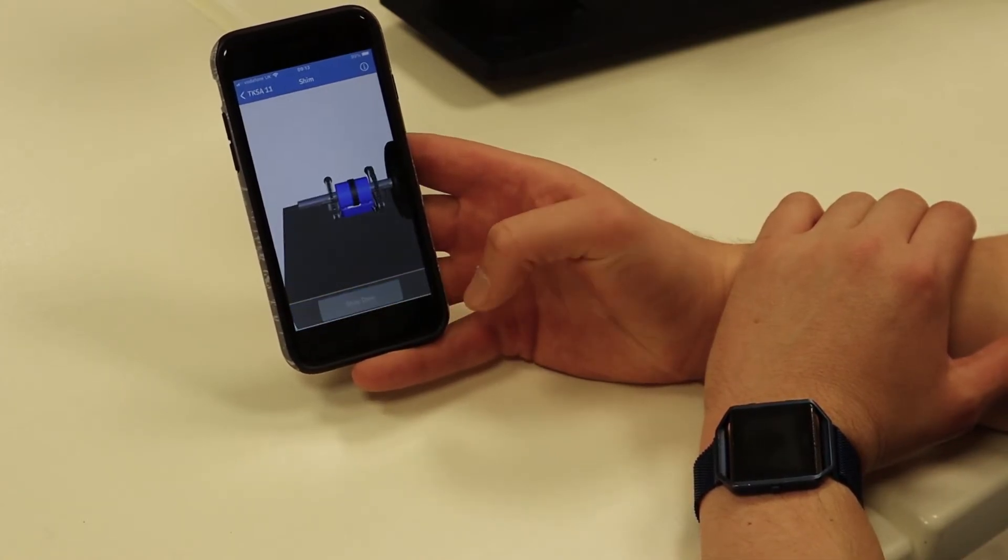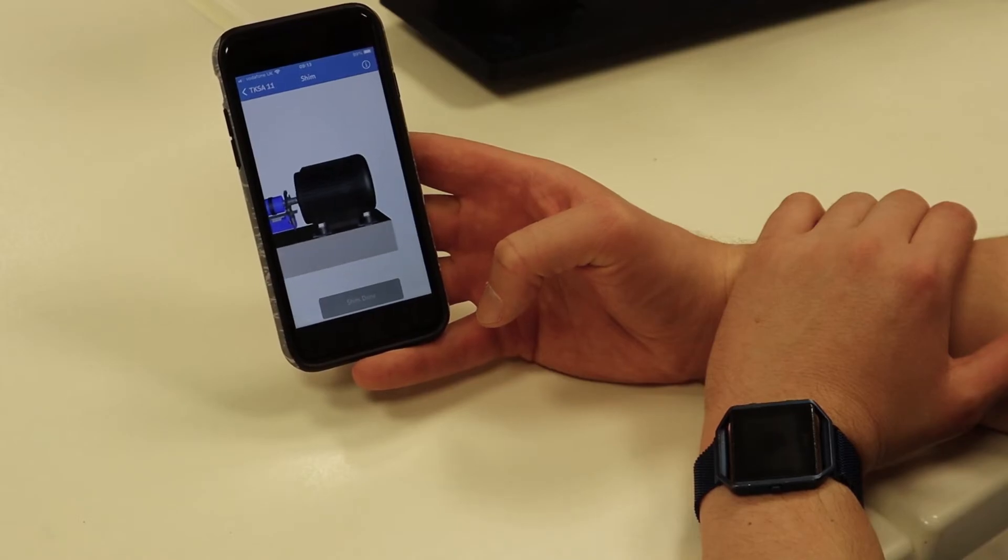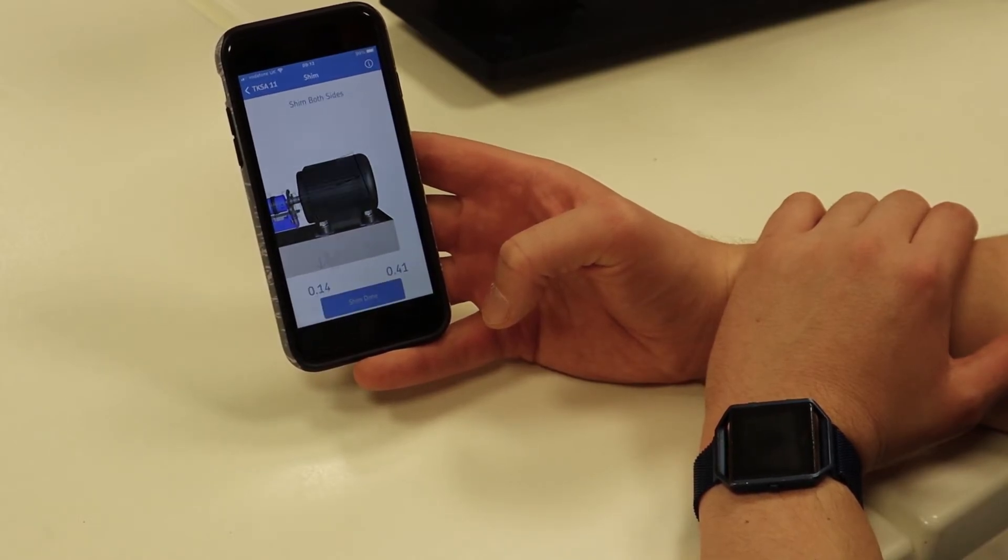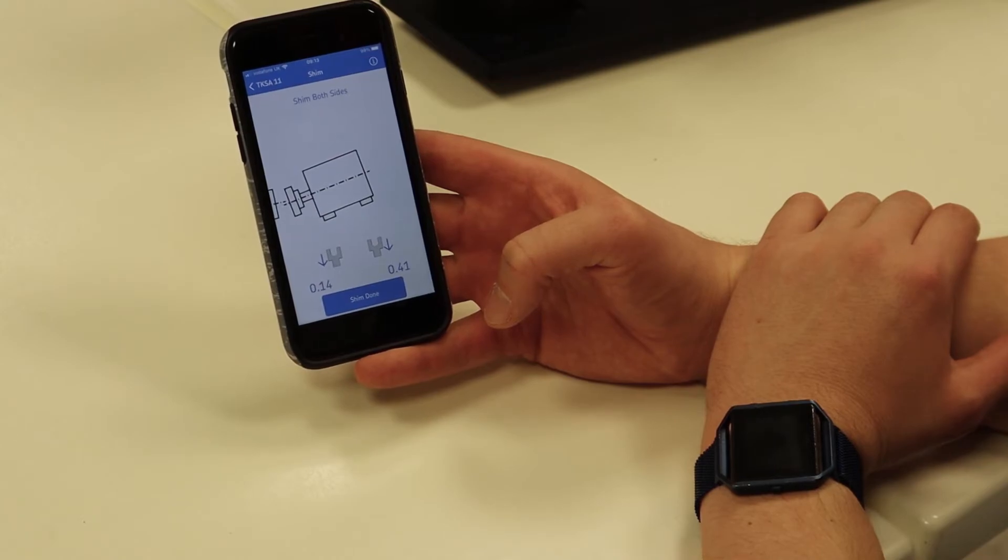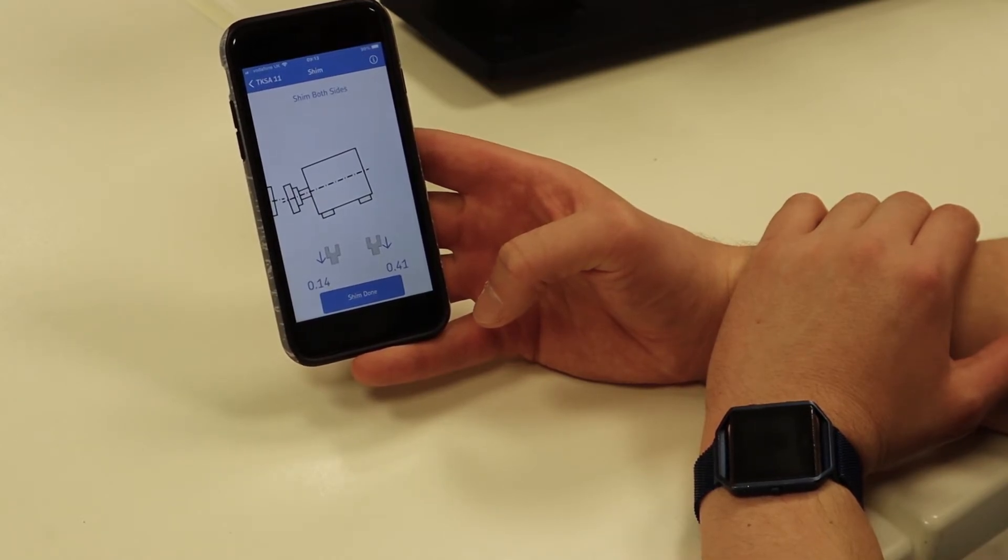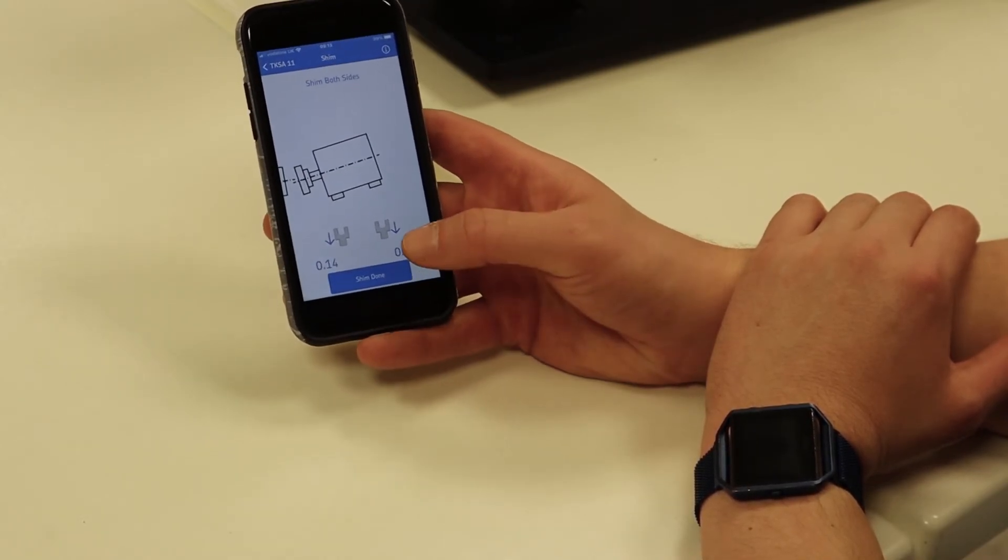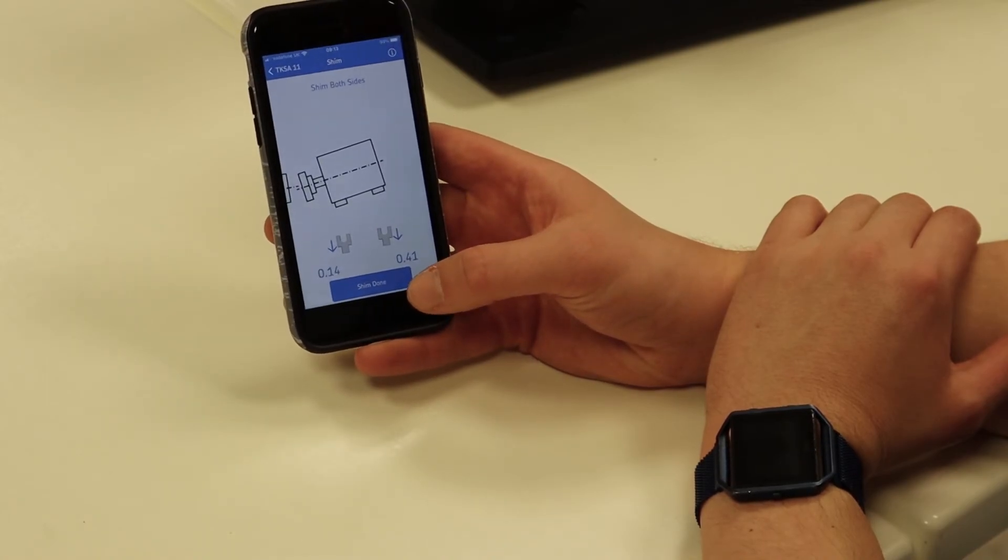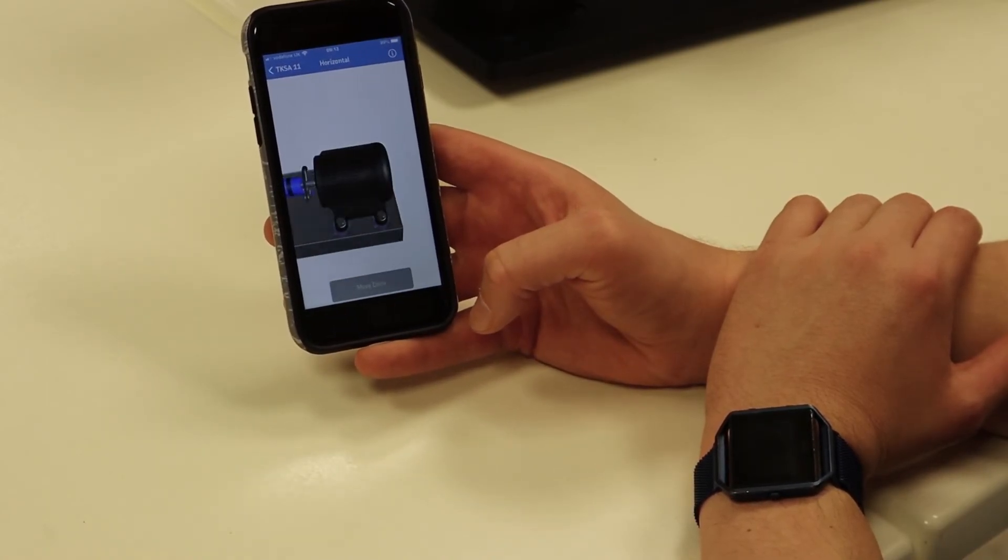So I want to align the device. At this point, it's showing me that I need to add shims to those positions, which I would do, or remove, or add, whichever it is. I would say shimming done.